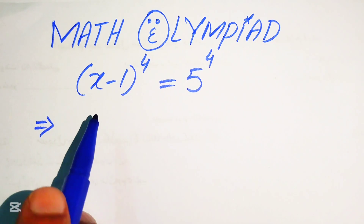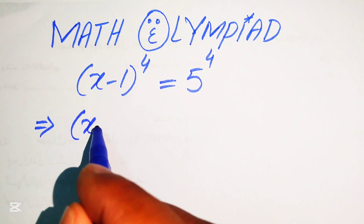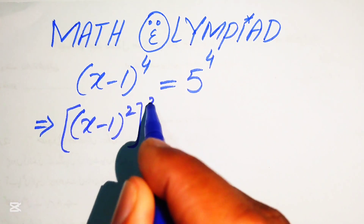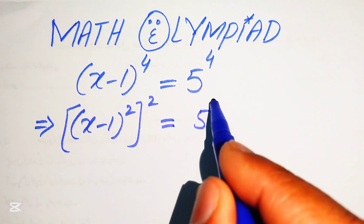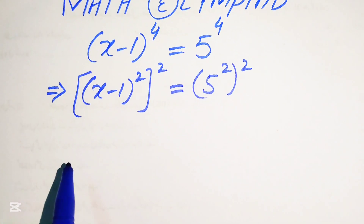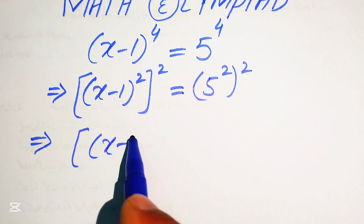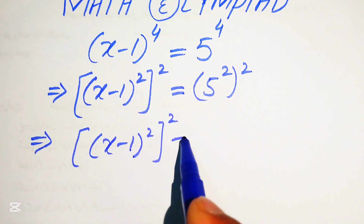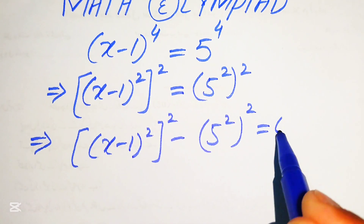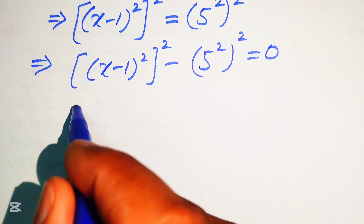The first step is to rewrite the equation in this form: ((x-1)²)² equals (5²)². Then we move the right-hand side term to the left, giving us ((x-1)²)² minus (5²)² equals 0.